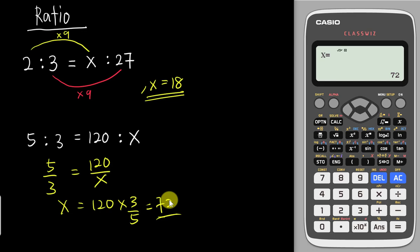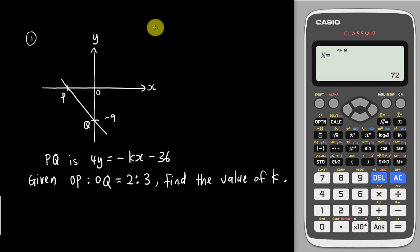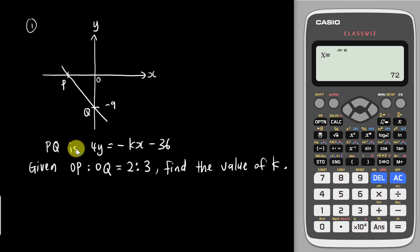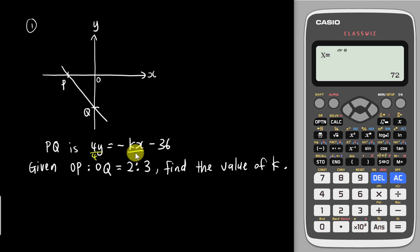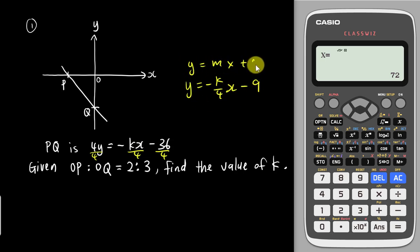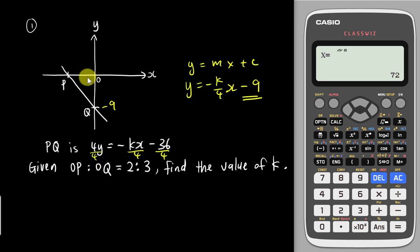Here are two applied examples. The first is about straight lines. The equation of PQ is 4y = -kx - 36. Since the question doesn't give the y-intercept directly, rearrange to y = mx + c by dividing everything by 4, giving y = (-k/4)x - 9. So c equals -9. The question also states the ratio O to P is 2 and O to Q is 3, and asks you to find the value of k.